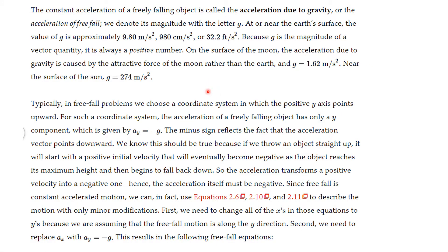The constant acceleration of a freely falling object is called the acceleration due to gravity, or the acceleration of free fall. We denote its magnitude with the letter g, and that's a lowercase g. At or near the Earth's surface, the value of g is approximately 9.80 meters per second squared, 980 centimeters per second squared, or 32.2 feet per second squared. And you have to adjust your units based on the problem sometimes.